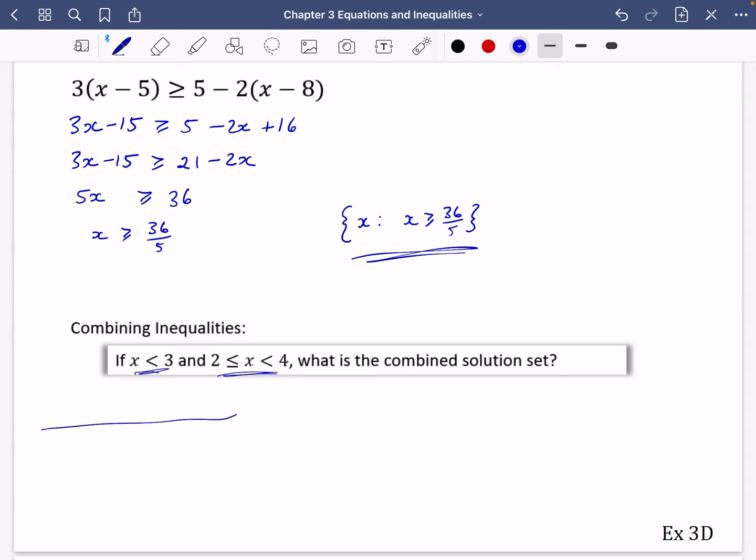So this first one is saying that X is less than three. So it is all of the numbers that are less than three. The second one that I've got here says that it is in between two and four. So here's two and here's four. And it's going to be the numbers that are in between two and four inclusive.